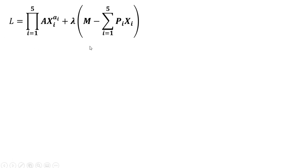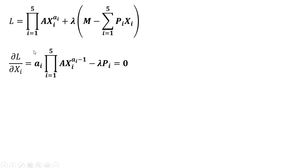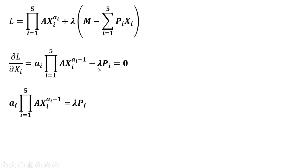We set up our Lagrangian for utility maximization — we have our utility function and then lambda times the constraint in parentheses. Taking the partial derivative of the Lagrangian with respect to good x subscript i: a subscript i comes down in front and we subtract one from the exponent, leaving us with minus lambda times the price of good i, set equal to zero. Moving lambda times P_i to the right-hand side and recognizing x to the minus one brings x into the denominator, we are left with this result.